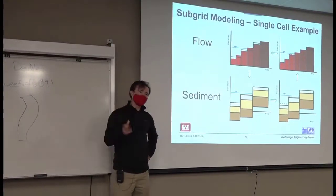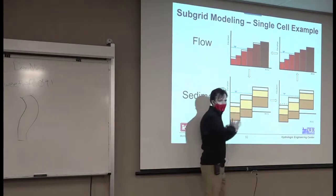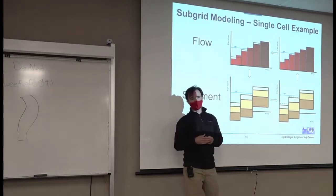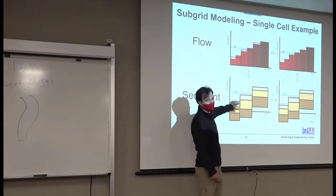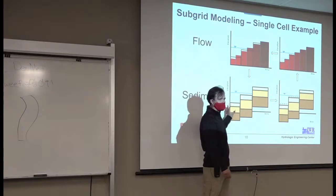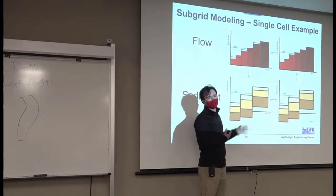But it has the flexibility to do both. Because if you were to say, I just want one sub-region for my whole cell, then it reduces to the 1D approach. If your cell is partially dry or partially wet, then you're changing the bed gradations everywhere in the cell. But if you have a lot of sub-grid resolution, you can capture that process.